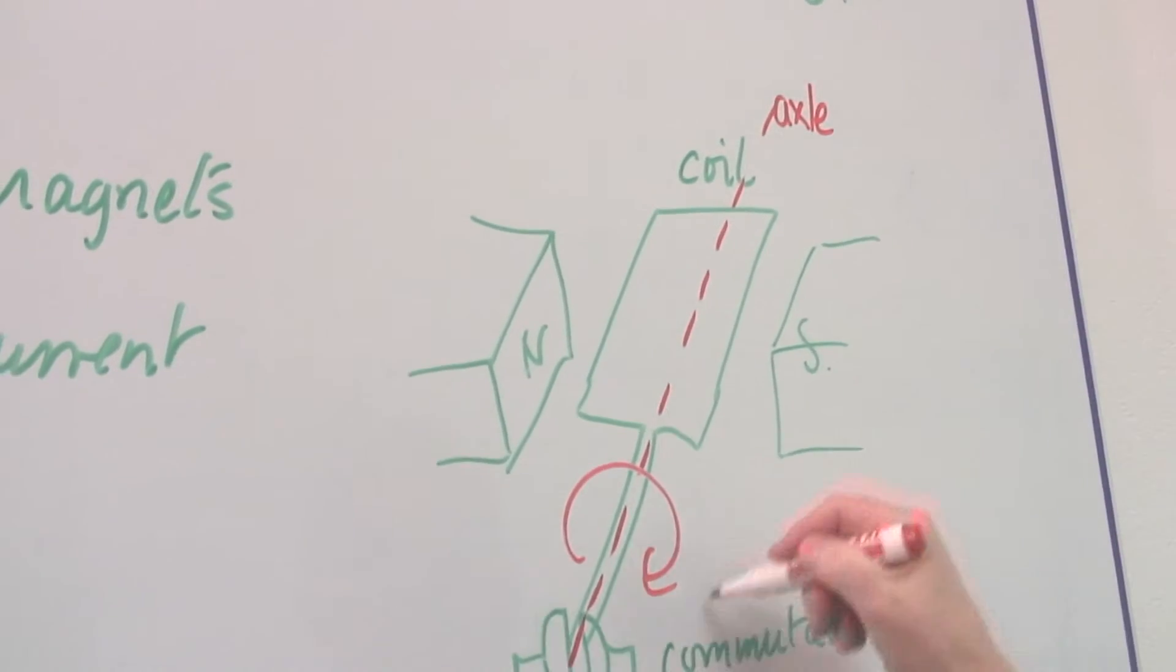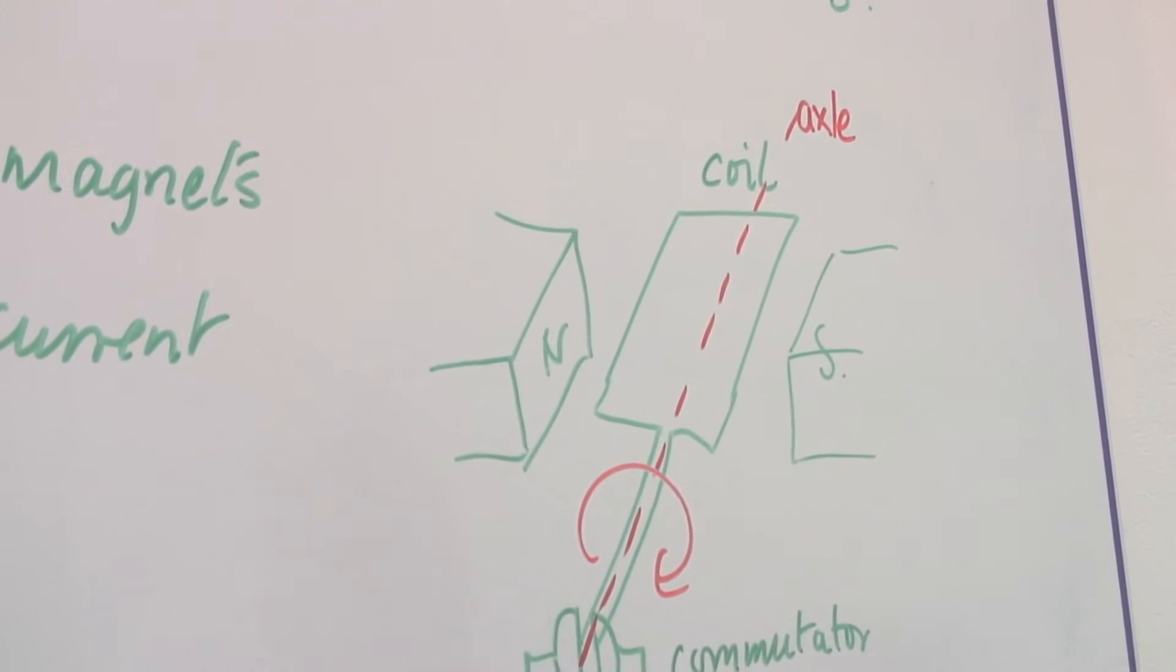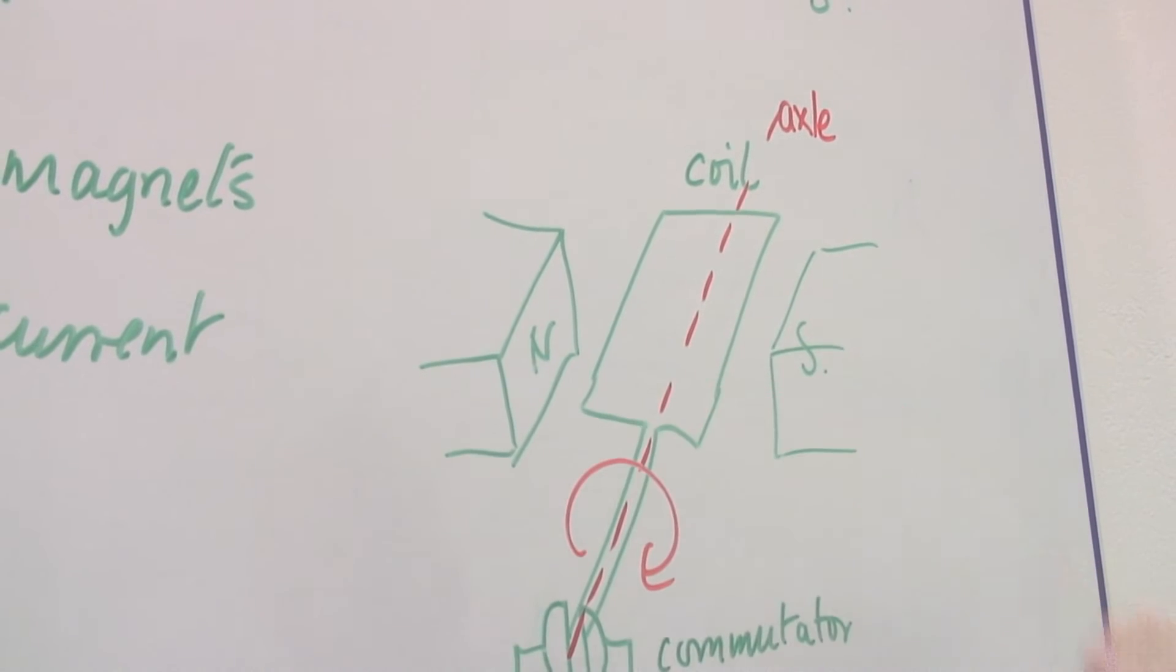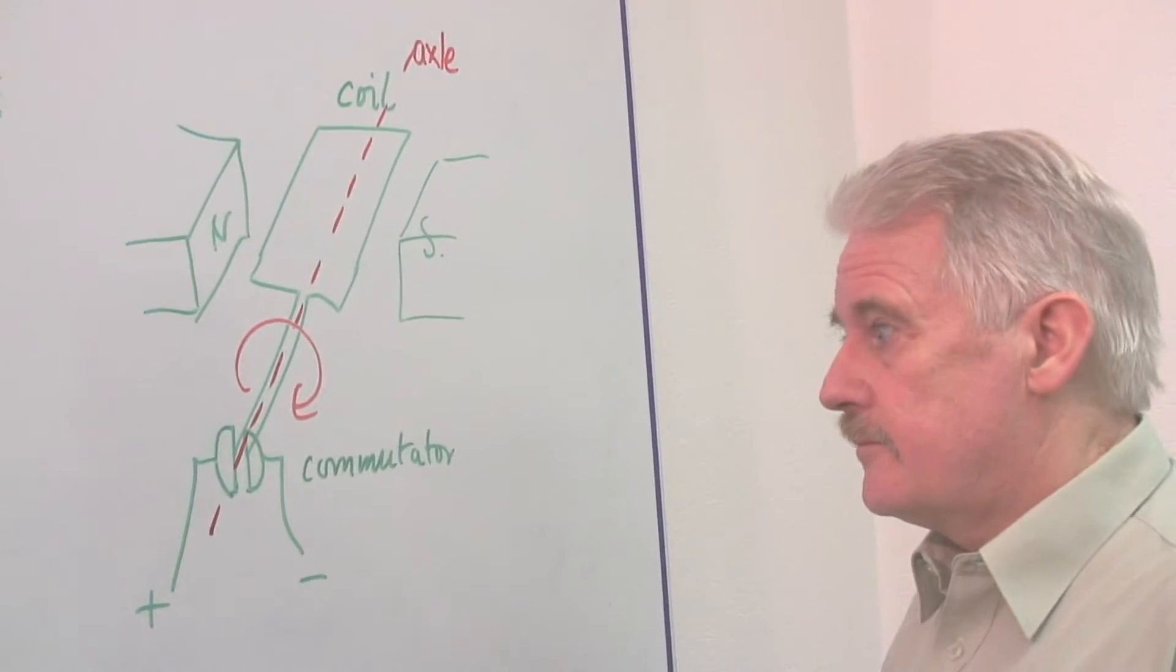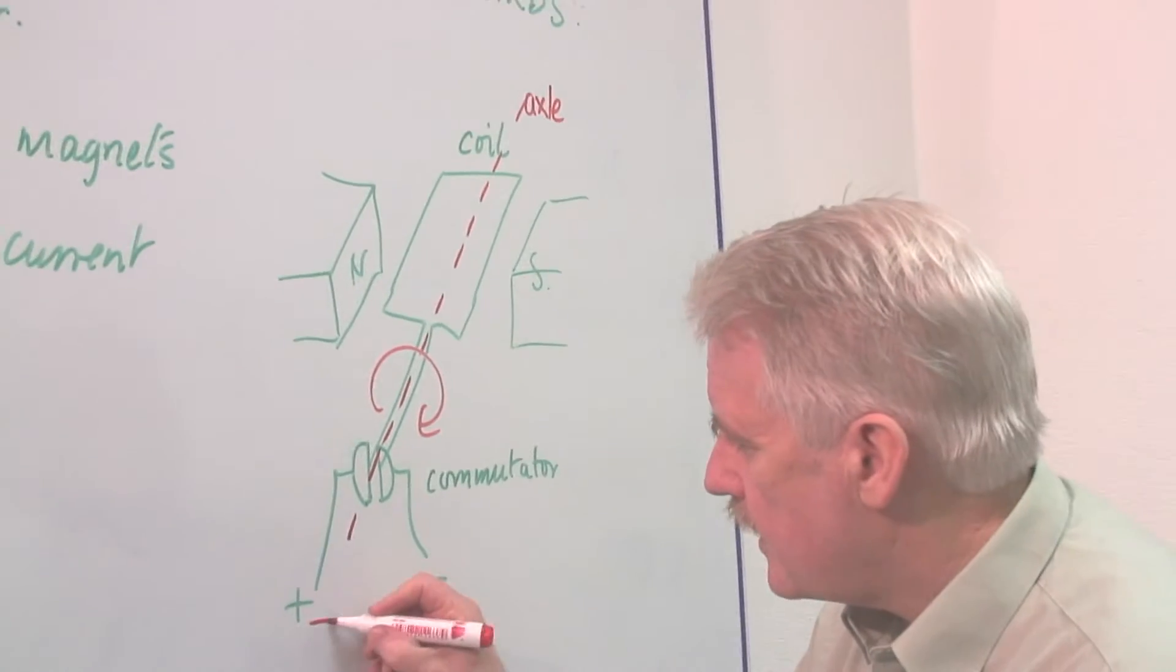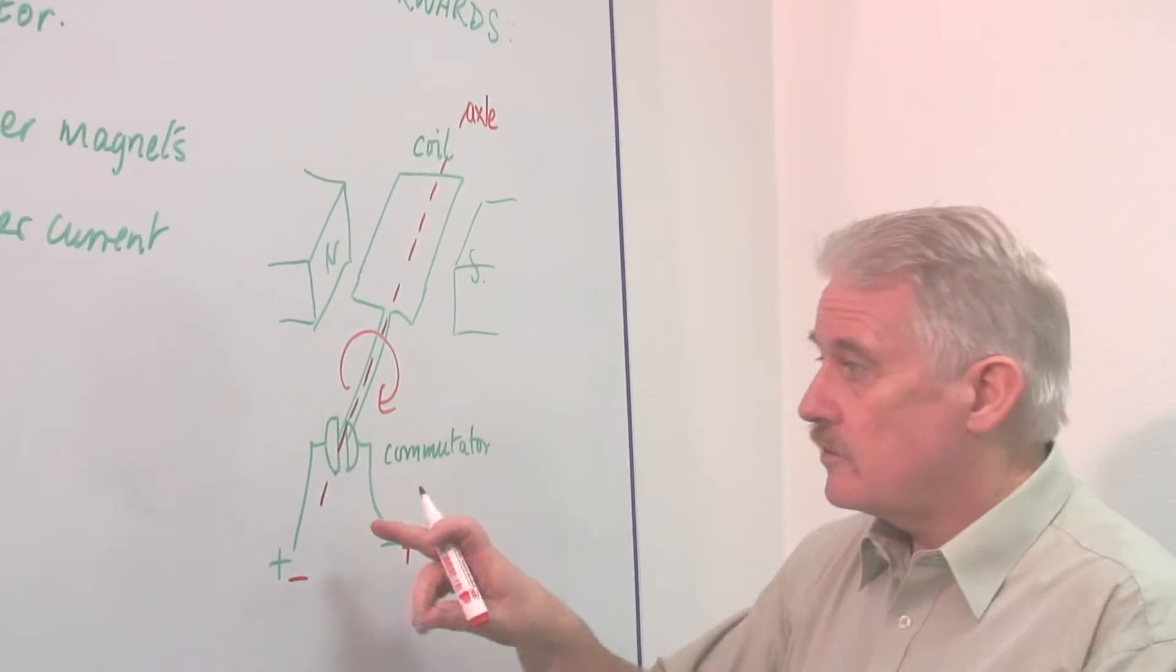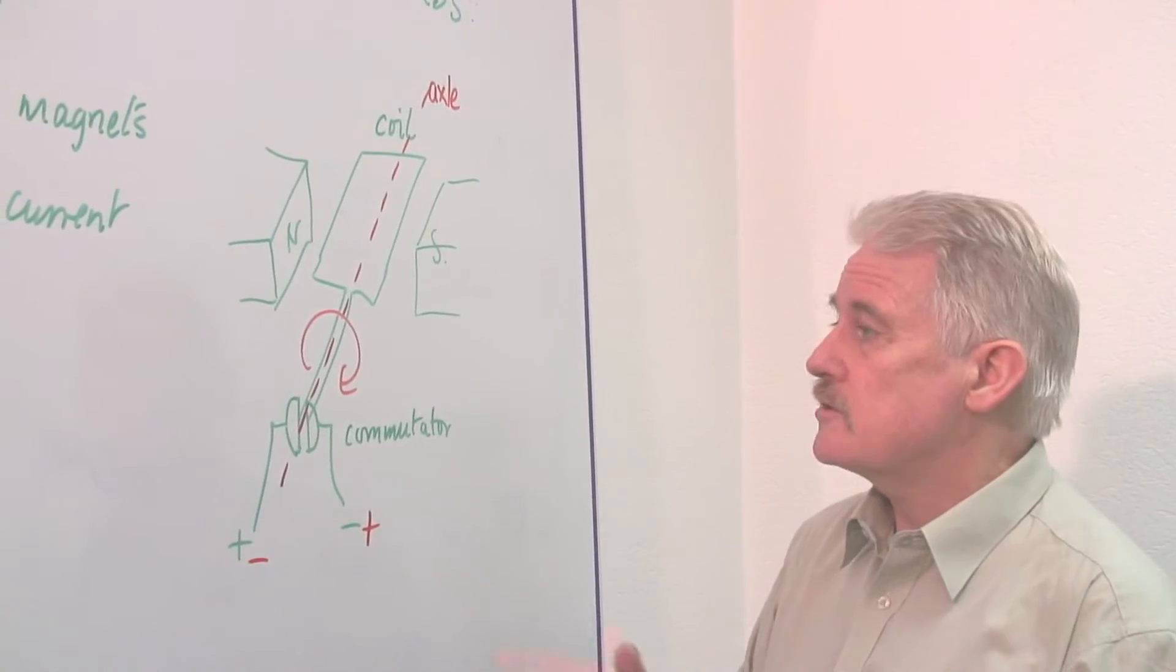If I wanted to rotate the other way, what I've got to do is change the direction of the current in this coil. And the easiest way to do that is to make that negative and that positive. In other words, swap over the battery connections.